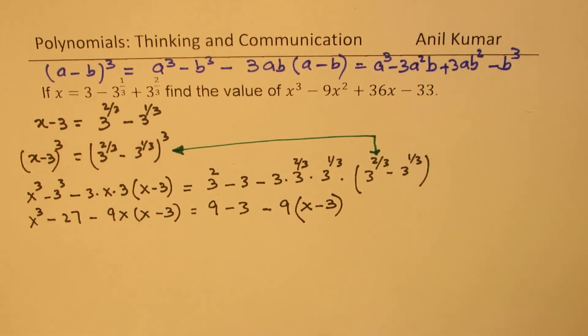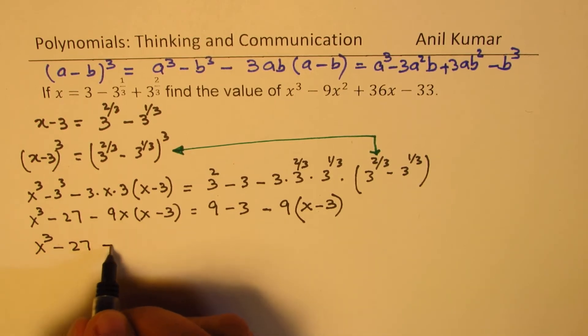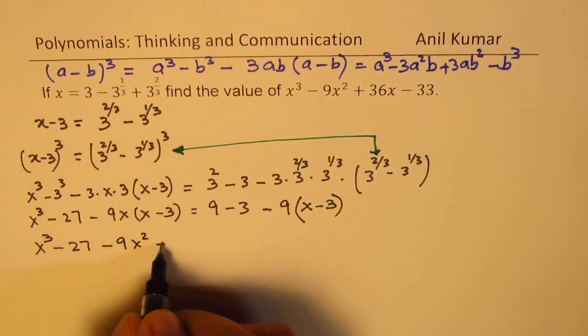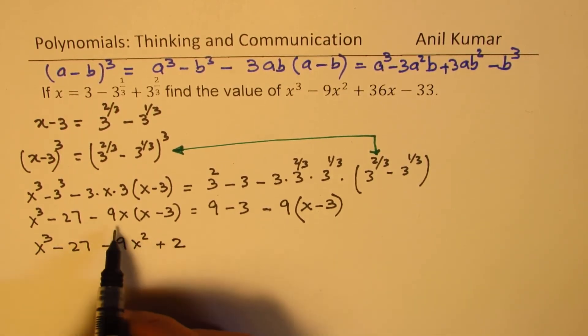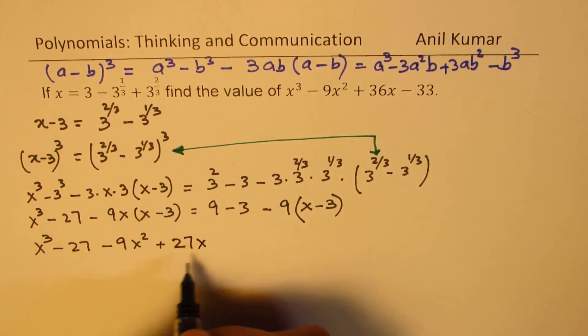So that's the beauty, and this is indeed a very good step to solve many questions which could involve such radical roots. So let's open now the brackets. So we have x cubed minus 27. Let's open this bracket. 9x squared plus 27, 9 times 3, 27x.